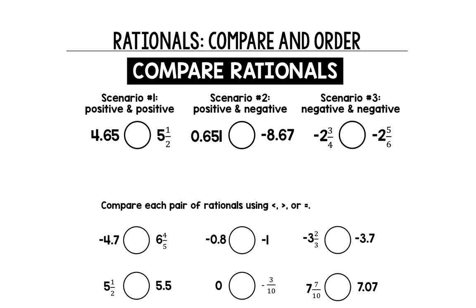So scenario number one, we have a positive and a positive that we're comparing greater than, less than, or equal to. This is a simplistic example because right off the bat we can see this four whole number and this five whole number. It doesn't even really matter what the rest of it is because we know that 4.65 is less than five and a half.